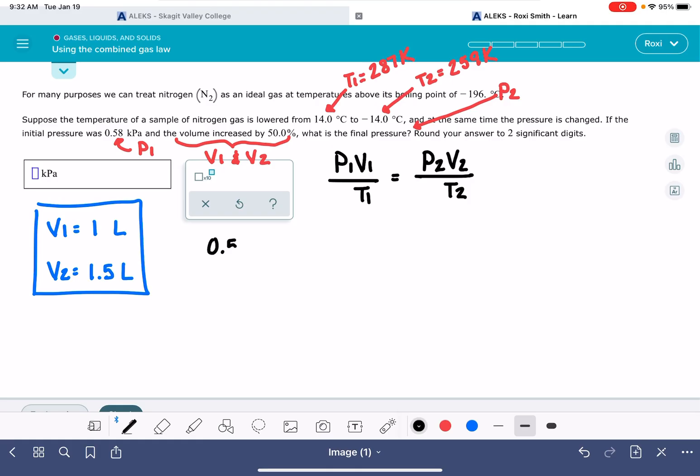P1 is 0.58 kilopascals. If we take a peek at the units that we're supposed to be reporting our pressure in, we can see that the units are in kilopascals, so that's how I know I don't want to change this into atmospheres. V1, we're going to call 1 liter. T1 is 287 kelvin. So those are all our initial variables. P2, that's the number that we're trying to figure out, so that's still an unknown. V2 is 1.5 liters. And T2 is 259 kelvin.